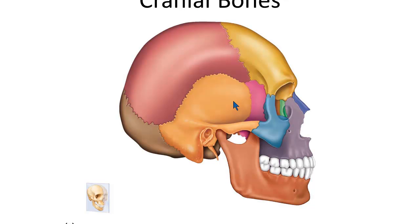Objective number one: the skull is made up of flat bones that have fused together, and they protect the brain. The vertebral column, otherwise known as the spine, is a series of vertebrae connected and separated by intervertebral discs, and its function is to protect the spinal cord. The thoracic cage, made up of the ribs and sternum, has the primary function of protecting the heart and the lungs.